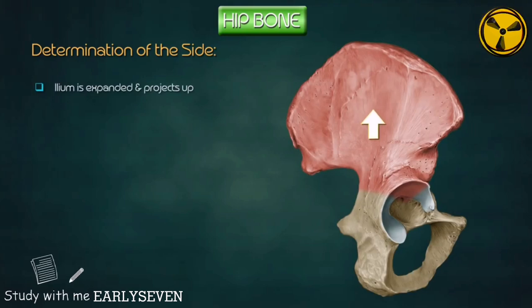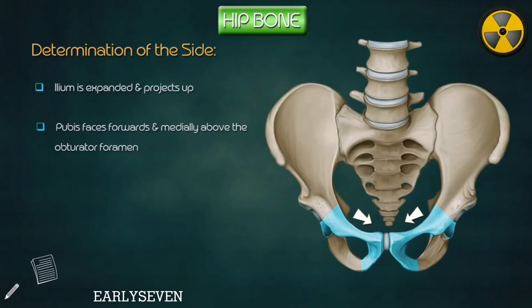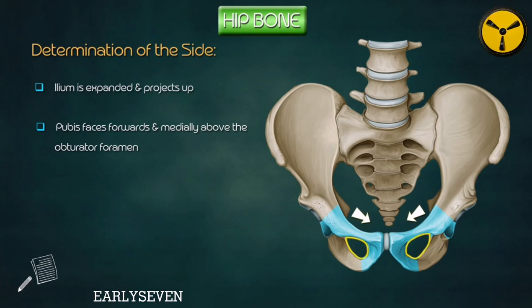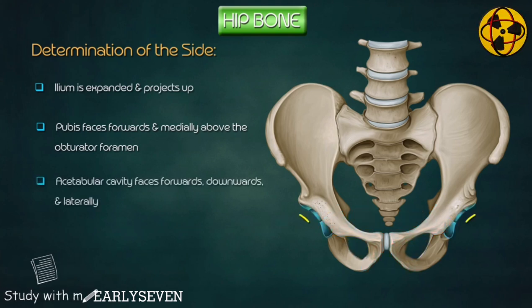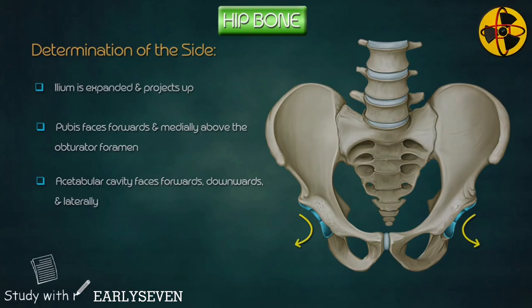Determination of the side. The ilium is expanded and projects up. The pubis faces forwards and medially above the obturator foramen. The acetabular cavity faces forwards, downwards, and laterally.